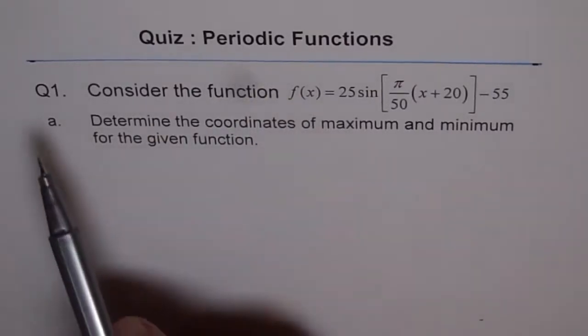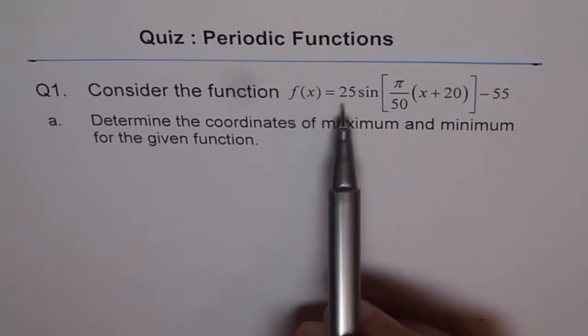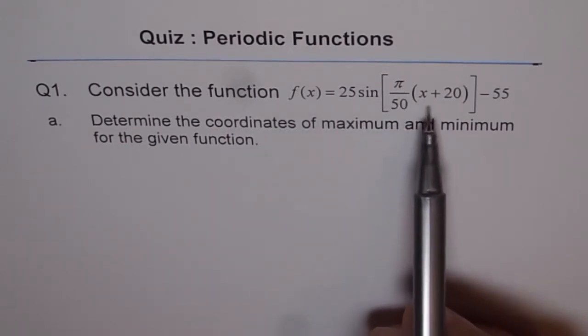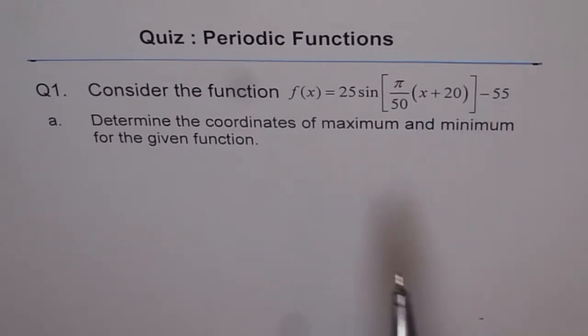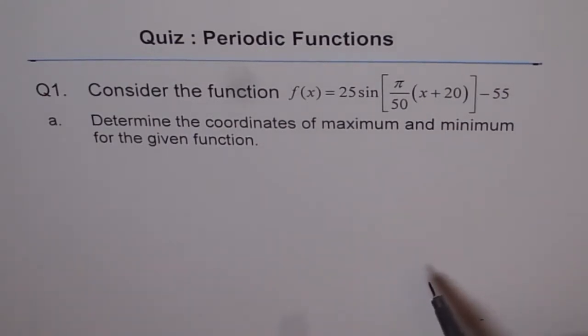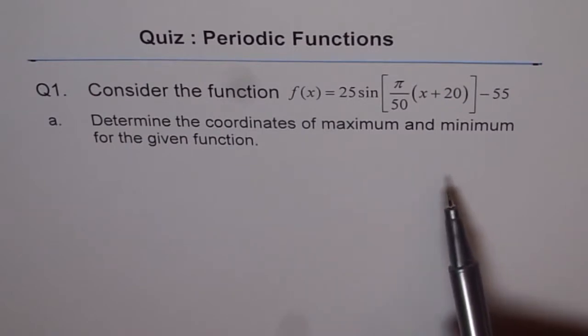Quiz: Periodic Functions. Question 1. Consider the function f(x) equals 25 sine of pi over 50 times x plus 20 minus 55. Now this is the solution to your problem. In the last video we had given you this question for the quiz which had two parts. So in this video I am trying to give you the answer for the first part and in the next video we will do part B of the same question.